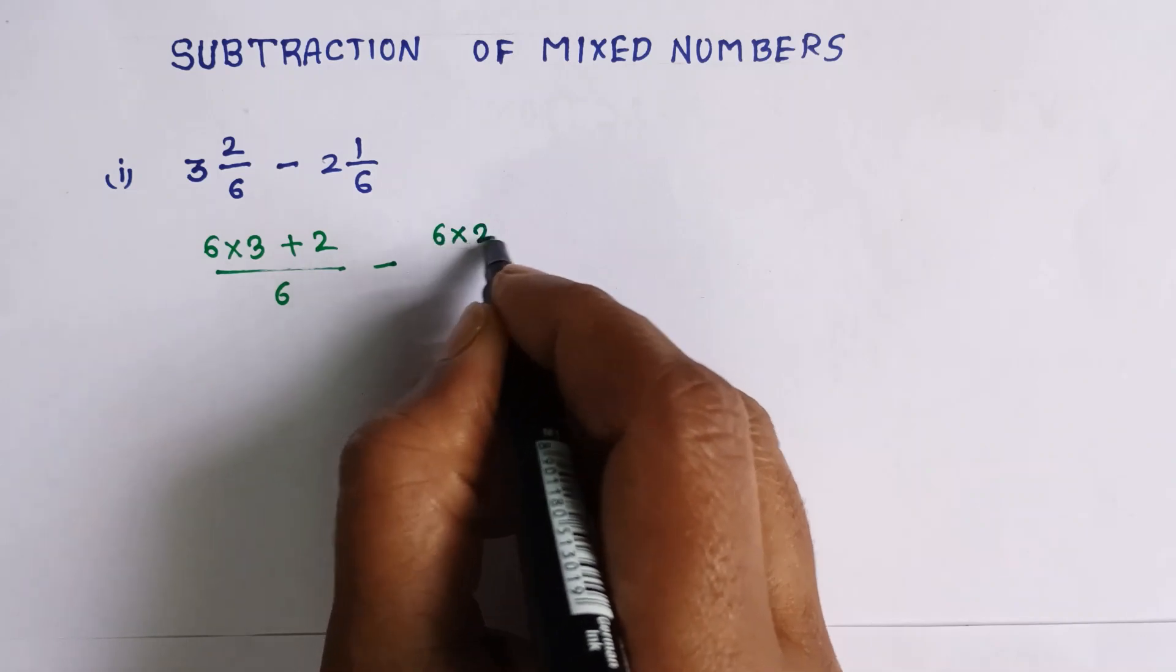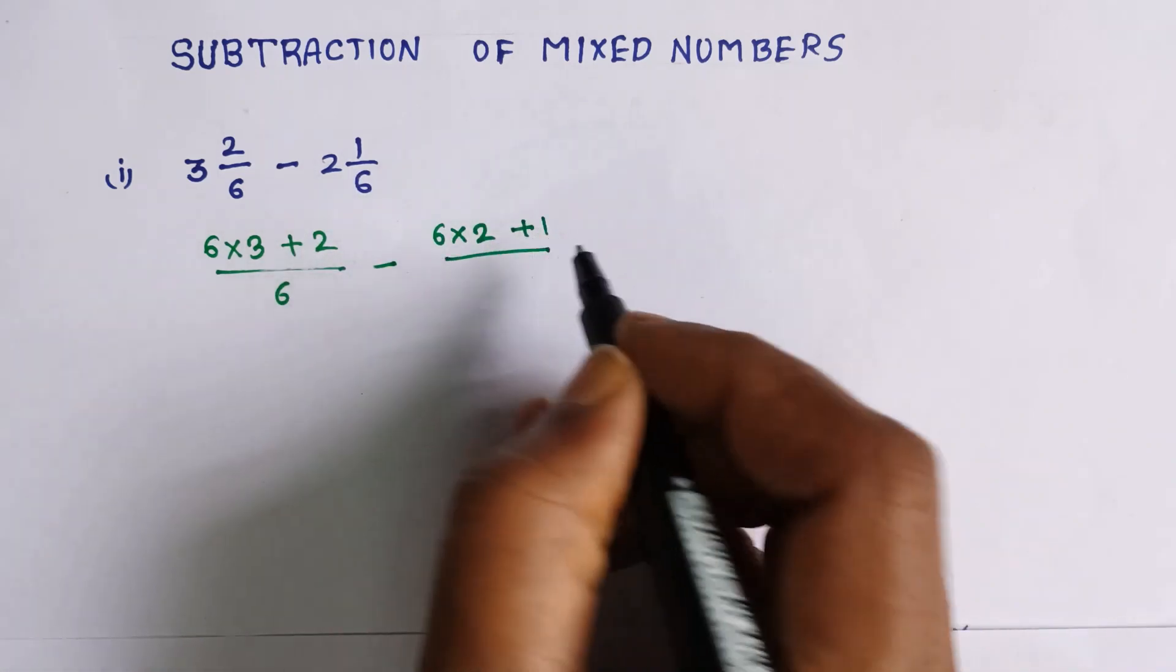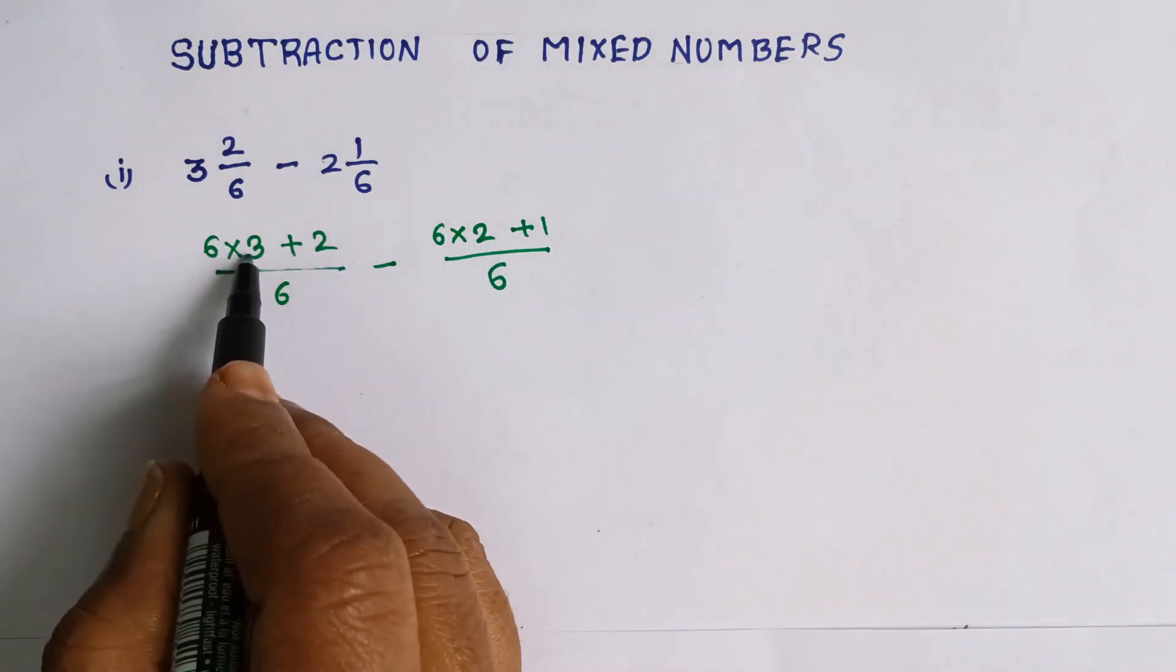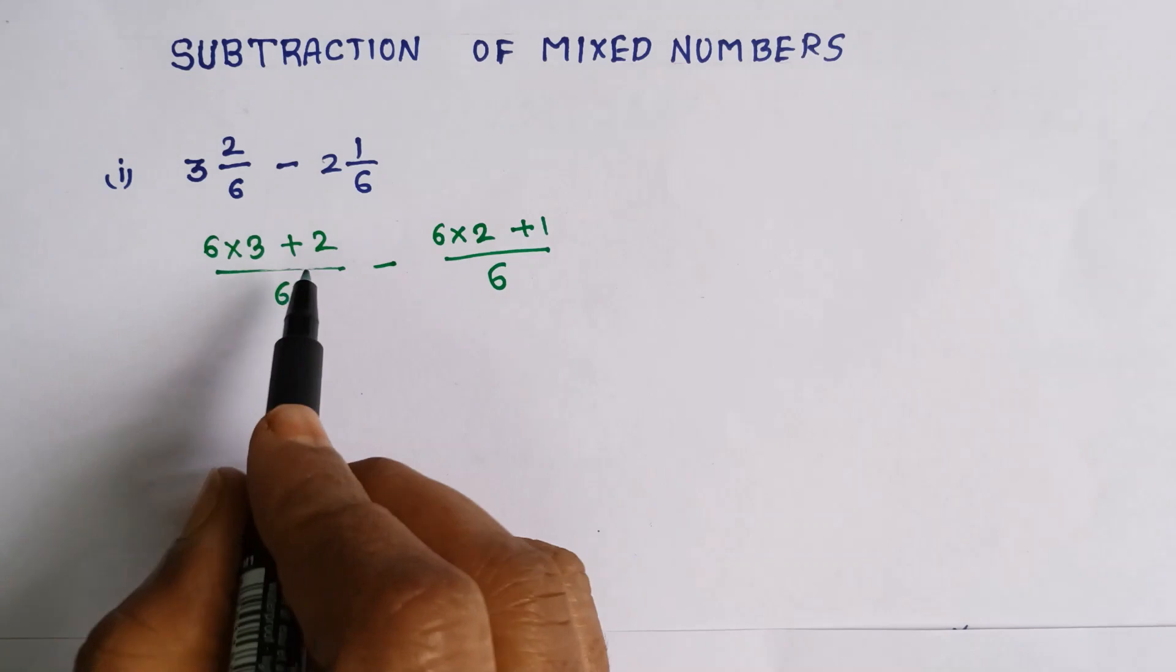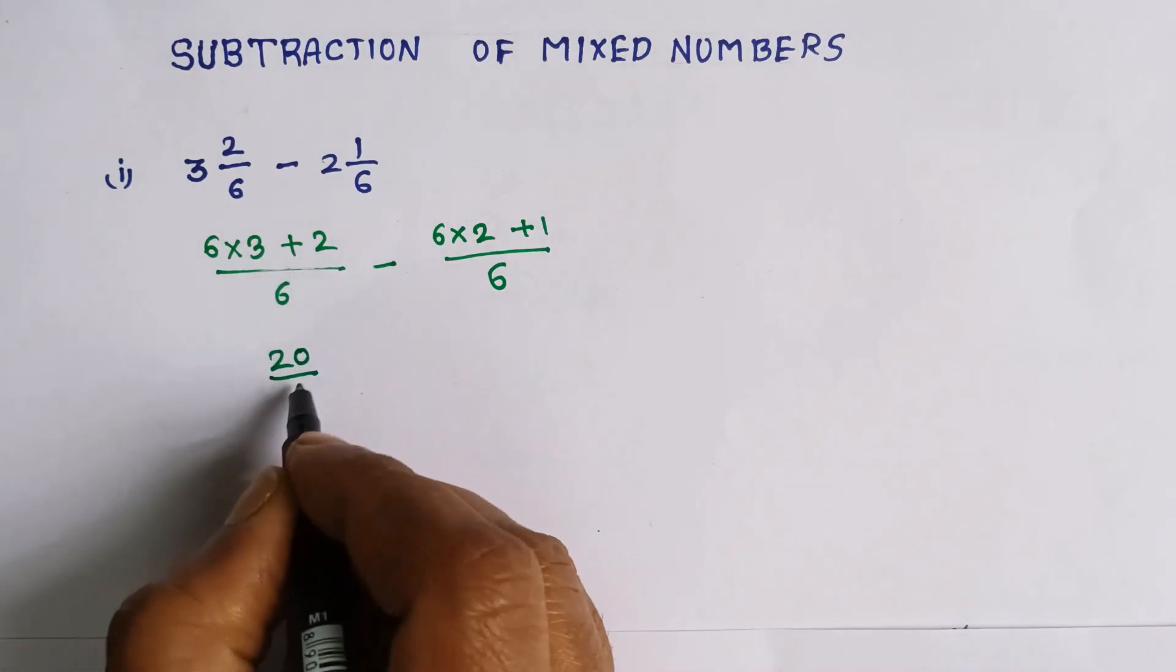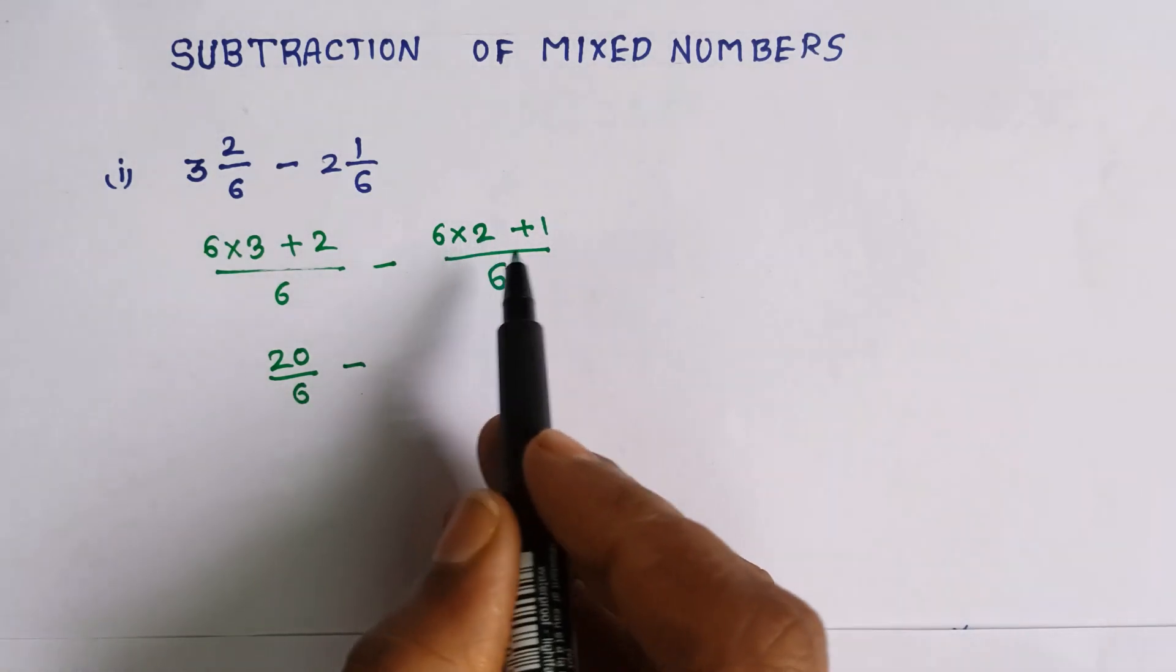So 6 times 3 is 18, 18 plus 2 is 20 by 6, minus 6 times 2 is 12 plus 1.